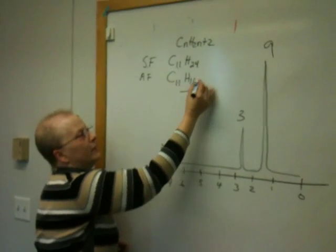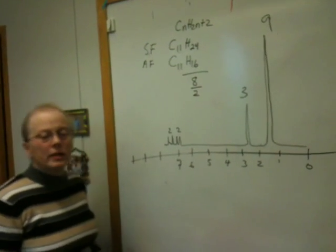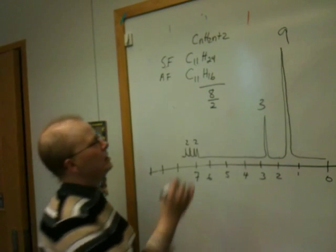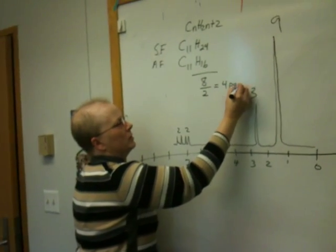The difference is 8. Remember, we divide this by 2 because we're interested in pairs of hydrogens. This will equal 4 pairs.